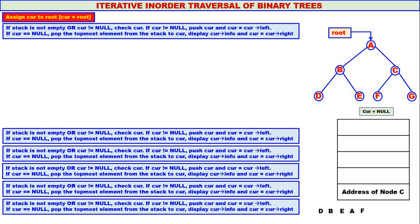Again, stack is not empty but curry is equal to null — one condition is true. We check curry. If curry is equal to null, pop the topmost element from the stack. The topmost element is address of node C — that is popped and assigned to curry. Display curry info — C is displayed. Curry moves to curry's right. The right child of C is G, so curry goes to G.